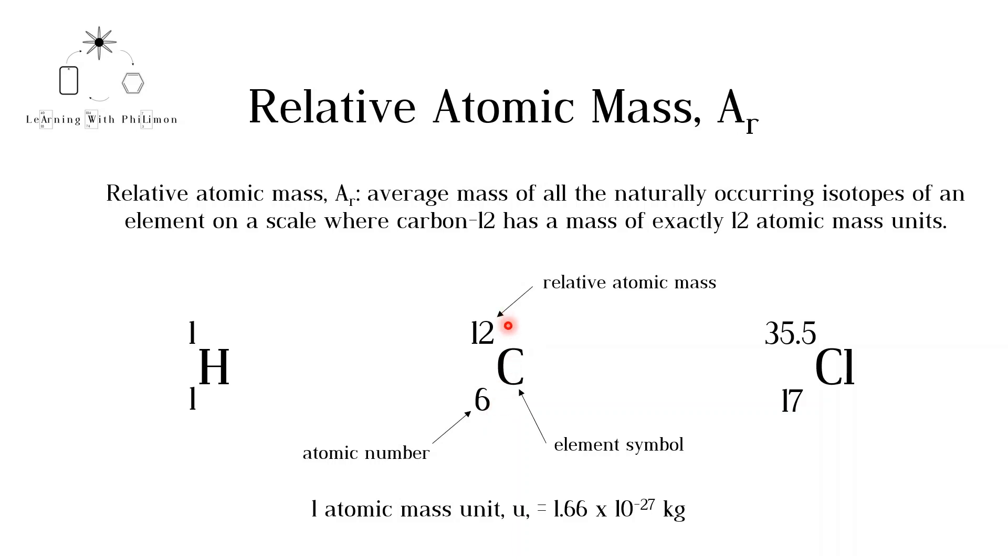But what about the mass? The relative atomic mass, Ar, is defined as the average mass of all the naturally occurring isotopes of an element on a scale where carbon-12 has a mass of exactly 12 atomic mass units.